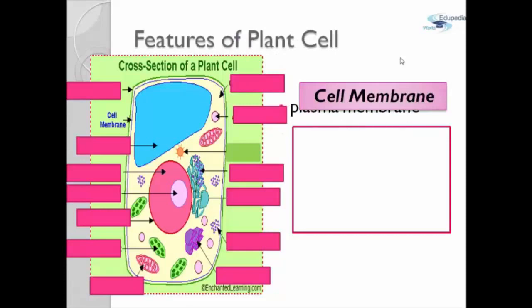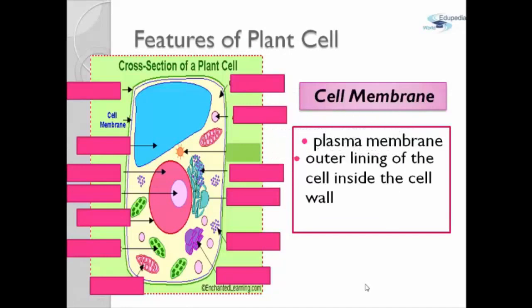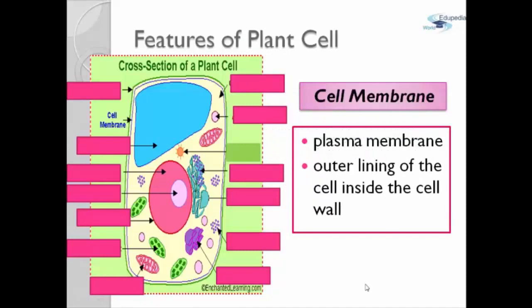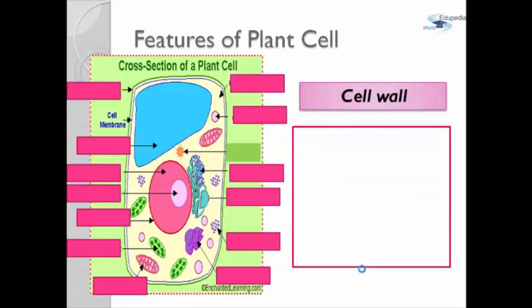The first part of this is cell membrane which is also called plasma membrane and it is the outer lining of the cell inside the cell wall.